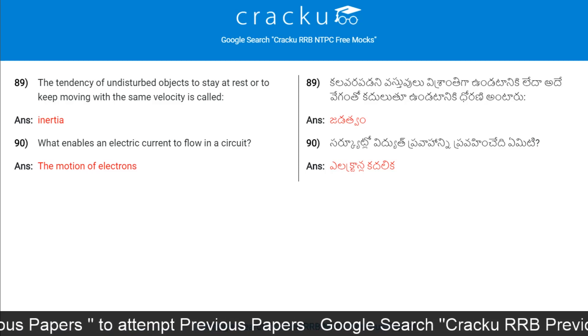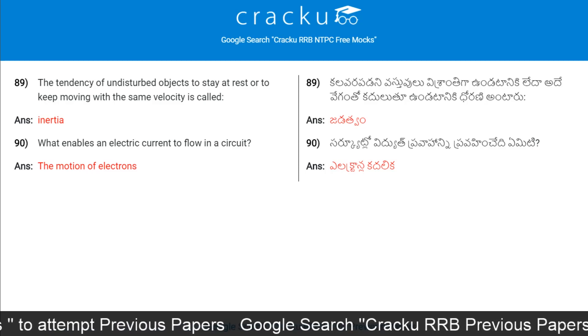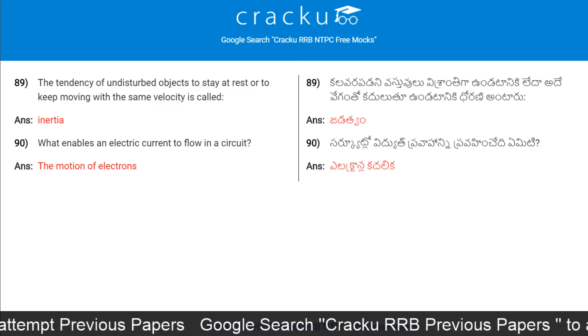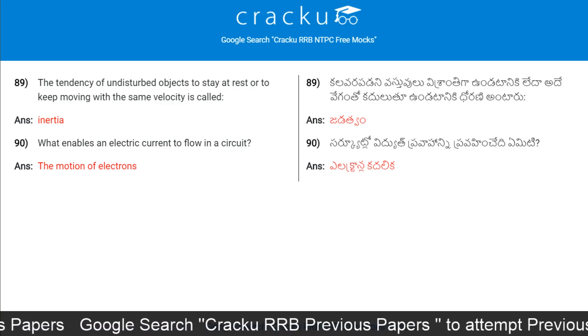What enables an electric current to flow in a circuit? The motion of electrons.